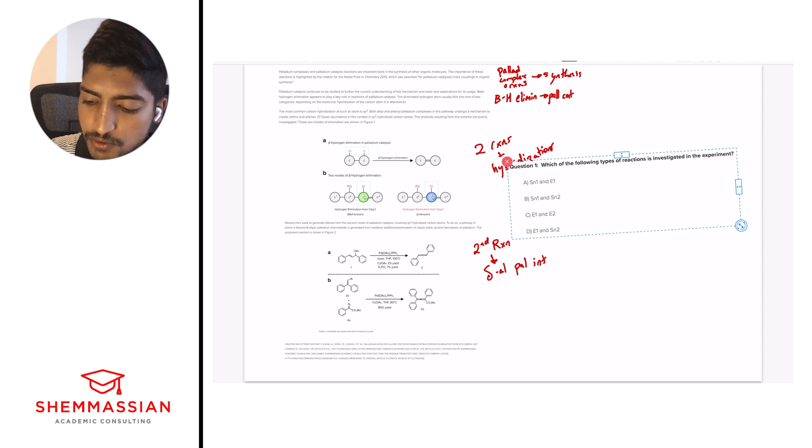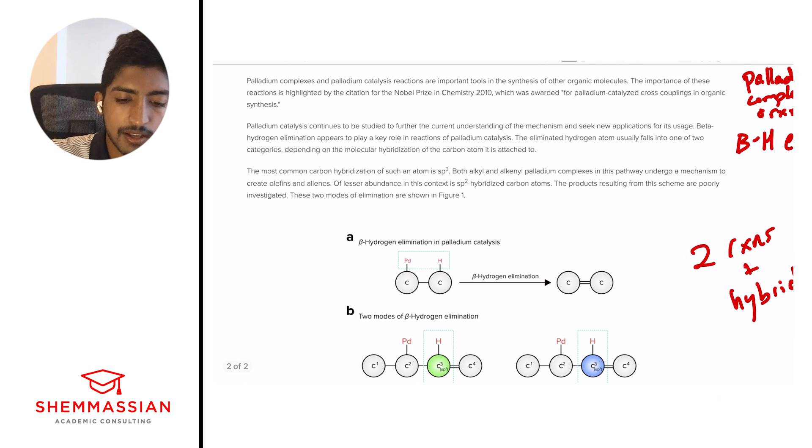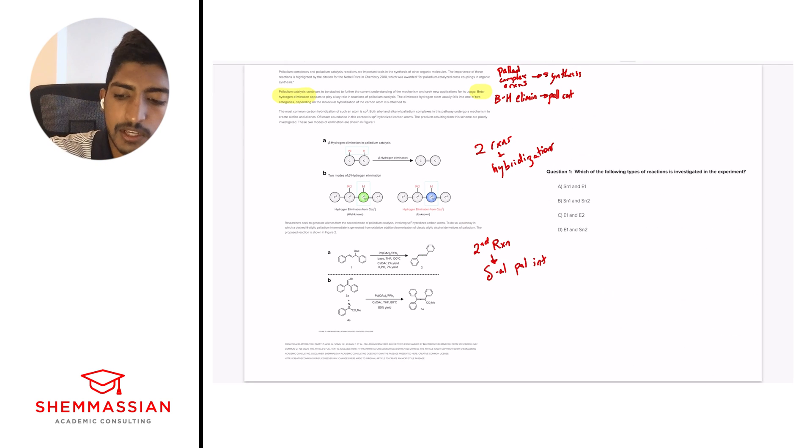All right. And so I have the first question right here. Which of the following types of reactions is investigated in the experiment? A, SN1 and E1, B, SN1 and SN2, C, E1 and E2, D, E1 and SN2. All right. So the first question is, are we looking at synthesis reactions or elimination reactions? Because oftentimes this dichotomy and understanding which one's which can help us eliminate a lot of answer choices. And so we should be realizing, and we wrote it up here, right? We're talking about elimination, right? We're talking about elimination reactions, not nucleophilic attack or anything like that. We're talking about beta hydrogen elimination. Let's go a little smaller. But yes, that is the big takeaway. And so right away, we can eliminate any reaction, any choice, answer choice that has only SN1s and SN2s.